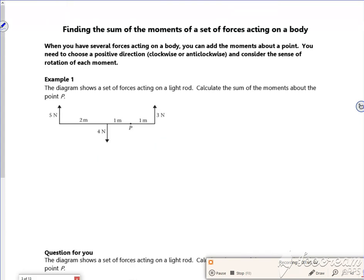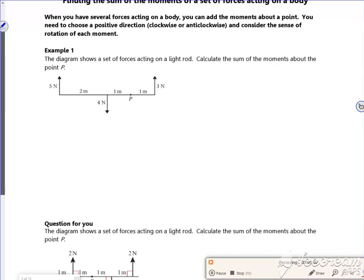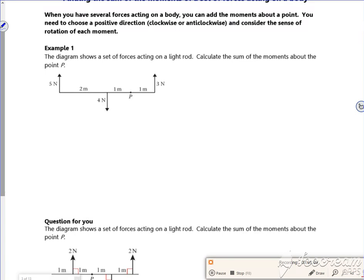Right, so let's have a look at this then. It just wants the sum of the moments. It's not in equilibrium, this is actually spinning. So let's have a think about pinning it at P. The three newton one will try and spin it anticlockwise. The four newton one will also try and spin it clockwise. But the five newton one will try and spin it clockwise.